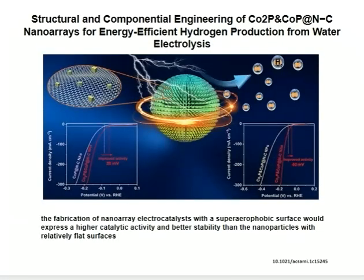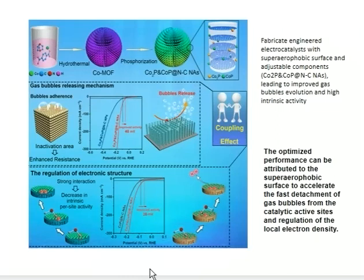This is an article about structural and compositional engineering of cobalt phosphide nanorays for energy-efficient hydrogen production from water electrolysis. The fabrication of nanoarray electrocatalysts with a superhydrophobic surface expresses higher catalytic activity and better stability than nanoparticles with relatively flat surfaces. The engineered electrocatalysts with superhydrophobic surface and adjustable components lead to improved gas bubble evolution and high intrinsic activity.